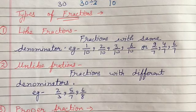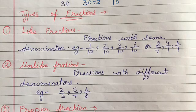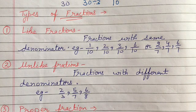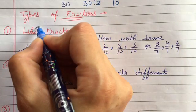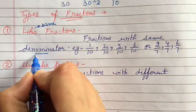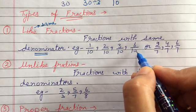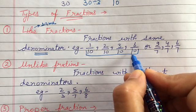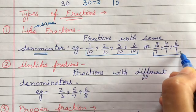Next — very very important — types of fractions. This is very important as questions will come from this in your exercises. First is like fractions. Like fractions are those which have the same denominator. For example: 1 by 10, 2 by 10, 3 by 10, and 6 by 10 — all have denominator 10, so they are like fractions. Similarly 2 by 7, 4 by 7, and 6 by 7 are also like fractions.